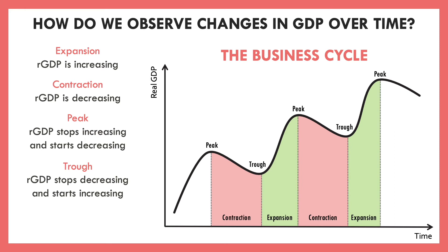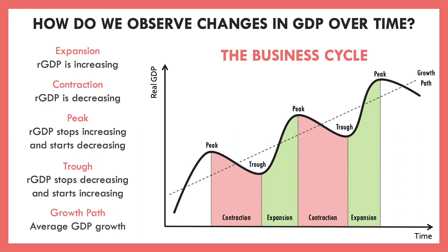If you look at this graph, it's hard to see through all the ups and downs. So what we like to do is draw an average line, and we call this our growth path. This just shows us the average GDP growth. If you notice, despite all the ups and downs, the highs are getting a little bit higher each time and the lows are getting a little less low. That's because our economy is gradually progressing upward, even despite all the fluctuations.